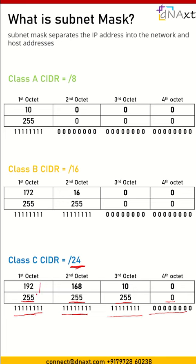Below 192 we have subnet mask 255, meaning it is purely the network portion. Below 168 we have 255, meaning it is also the network portion. Below 10 we have 255, meaning it is also the network portion. And below 0 we have a 0 in the subnet mask, meaning it is purely the host portion. So in class C we have 3 octets for network and 1 octet for the host. Thank you.